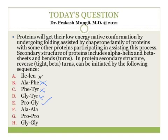Option F is alanine and alanine — alanine is an aliphatic nonpolar amino acid and does not lead to bends. Option G is proline and proline — while proline does induce bends, you wouldn't find two prolines together; glycine is what accompanies it. Option H is glycine and glycine — glycine is commonly found in bends but does not initiate them. So option E, proline and glycine, is confirmed as the correct choice.